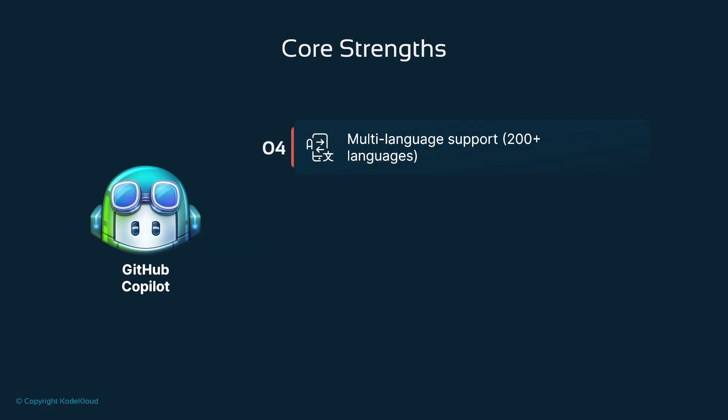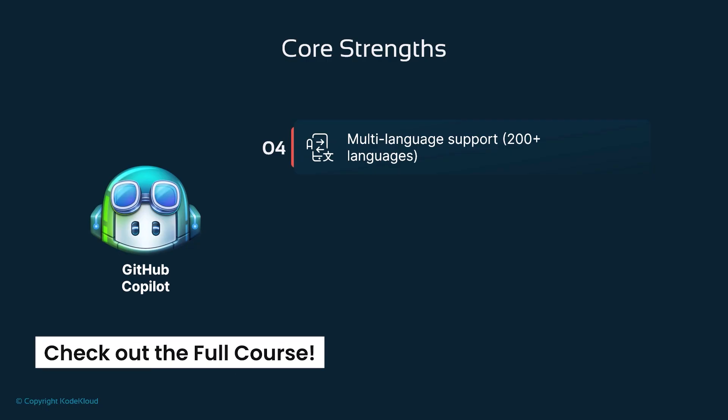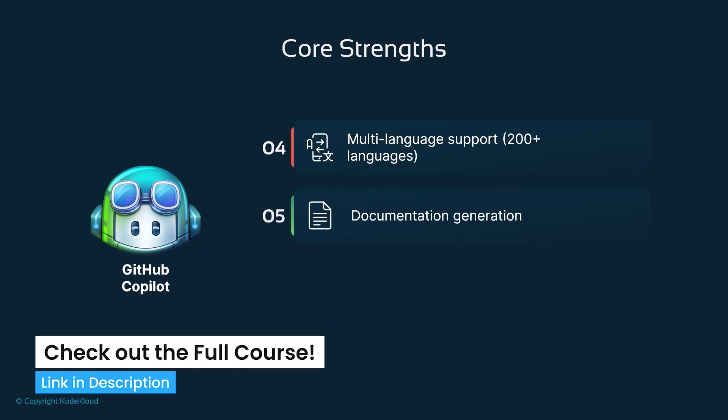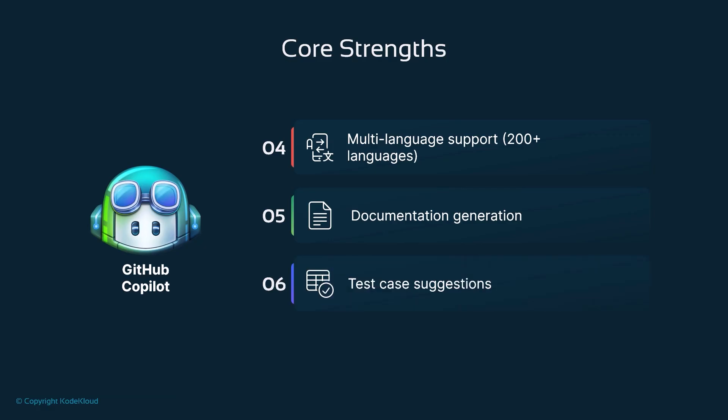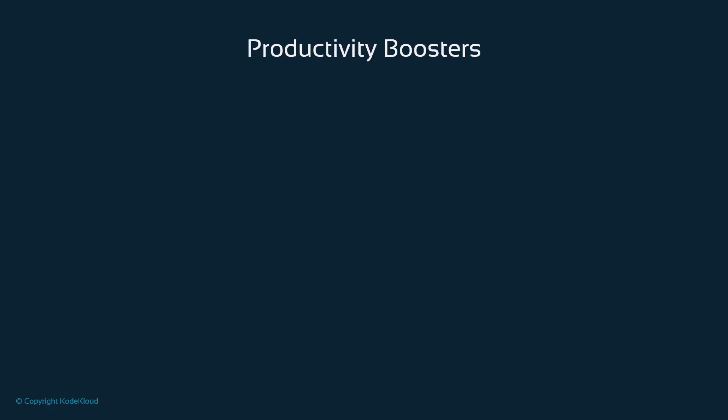Beyond basic coding, Copilot supports over 200 programming languages, making it incredibly versatile. It doesn't just write code — it can generate documentation on the fly and even suggest relevant test cases, and we'll do that in this course. This comprehensive support makes it valuable across the entire software development life cycle.